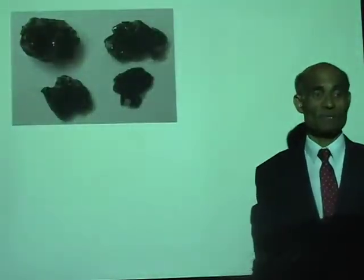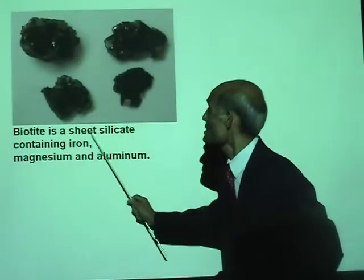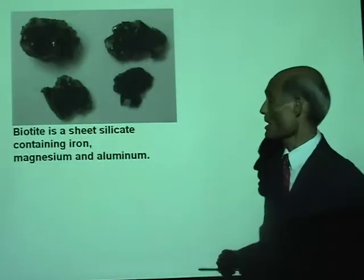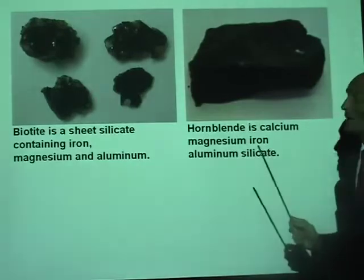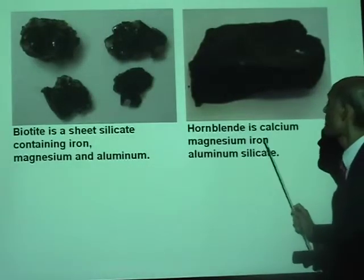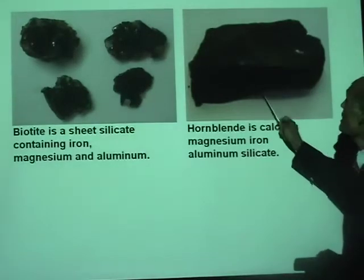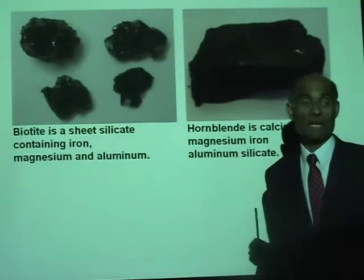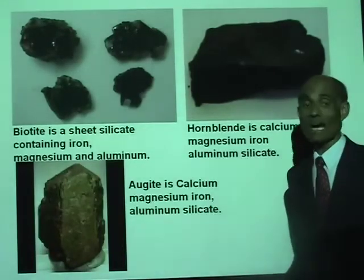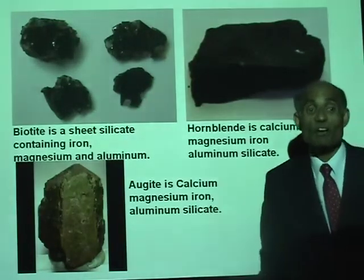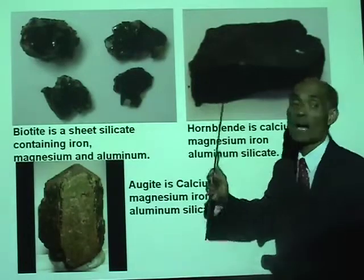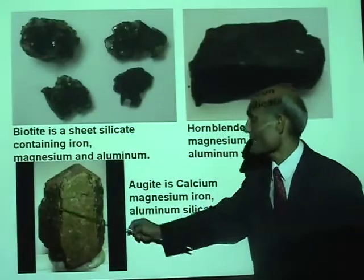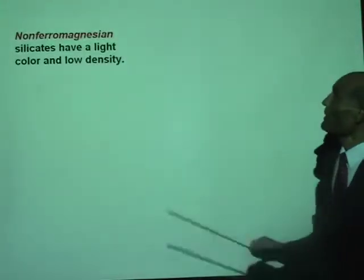Biotite is a sheet silicate containing iron, magnesium, and aluminum — you can see it is dark and hard. Hornblende is calcium, magnesium, iron, and aluminum silicate. And augite is also calcium, magnesium, iron, and aluminum silicate. Olivine is a greenish-looking gemstone, which is an extrusive mineral. All these are examples of ferromagnesian silicates — the silicates that contain iron, magnesium, calcium, aluminum, and so on.